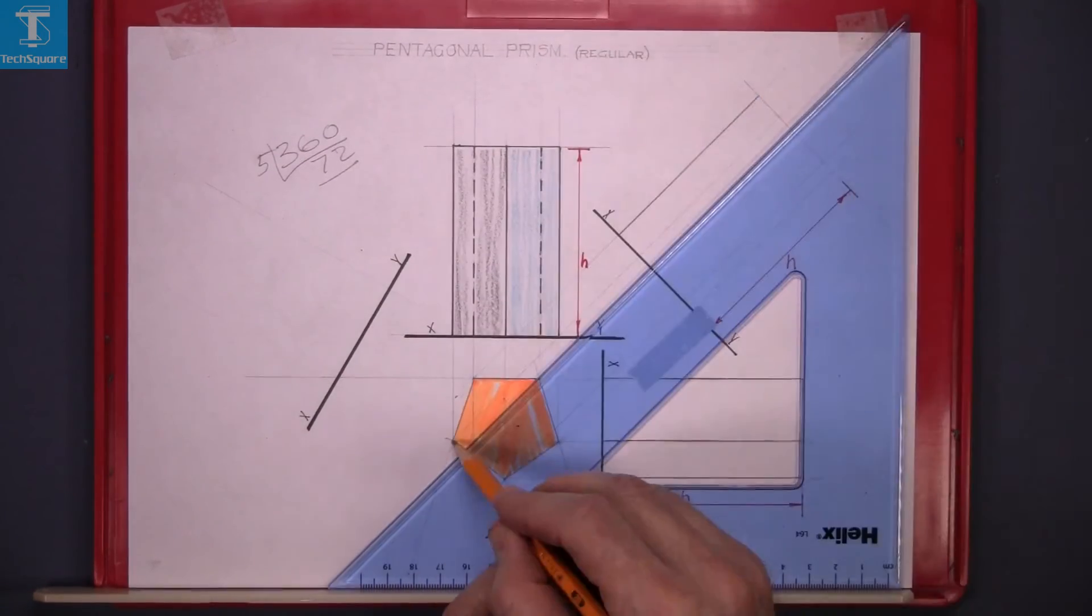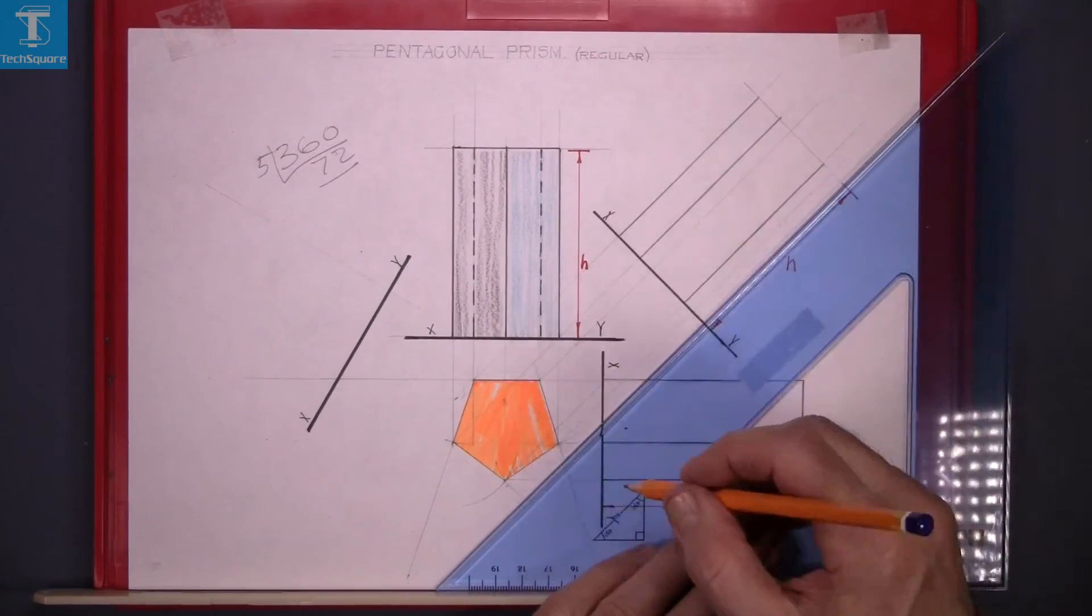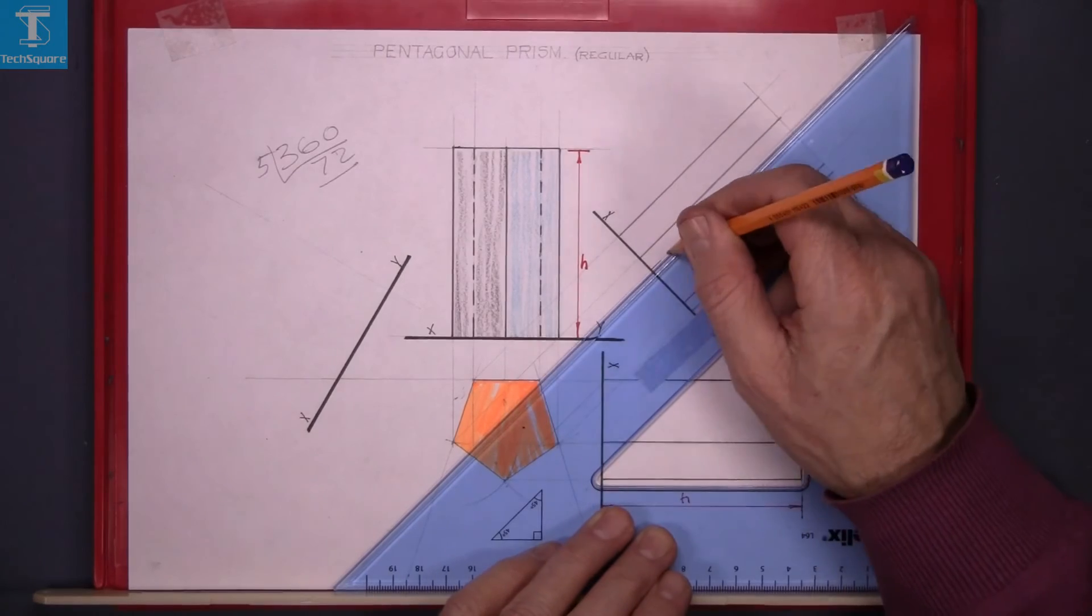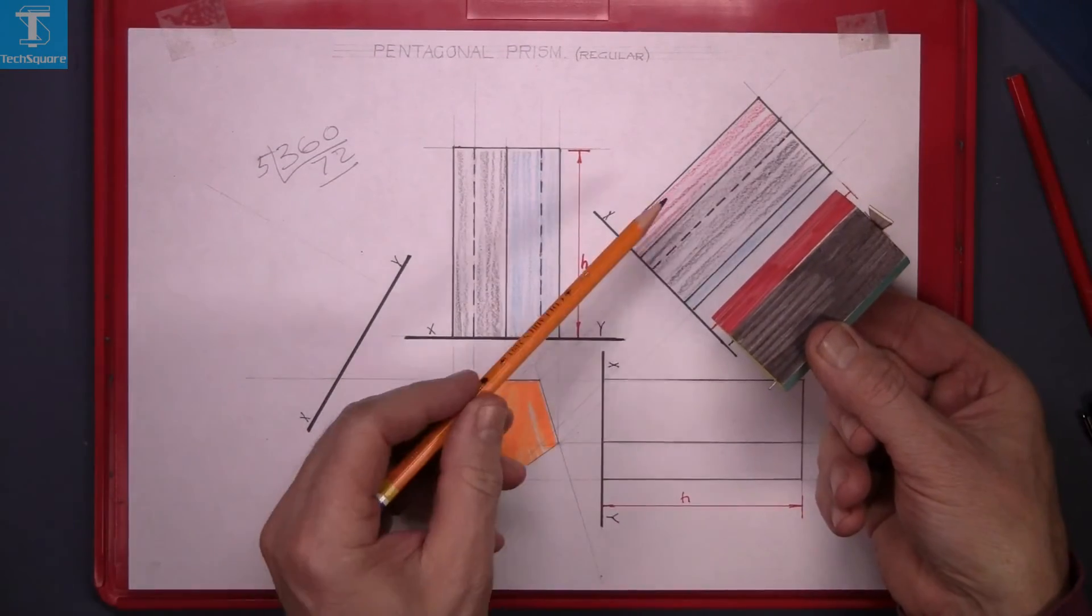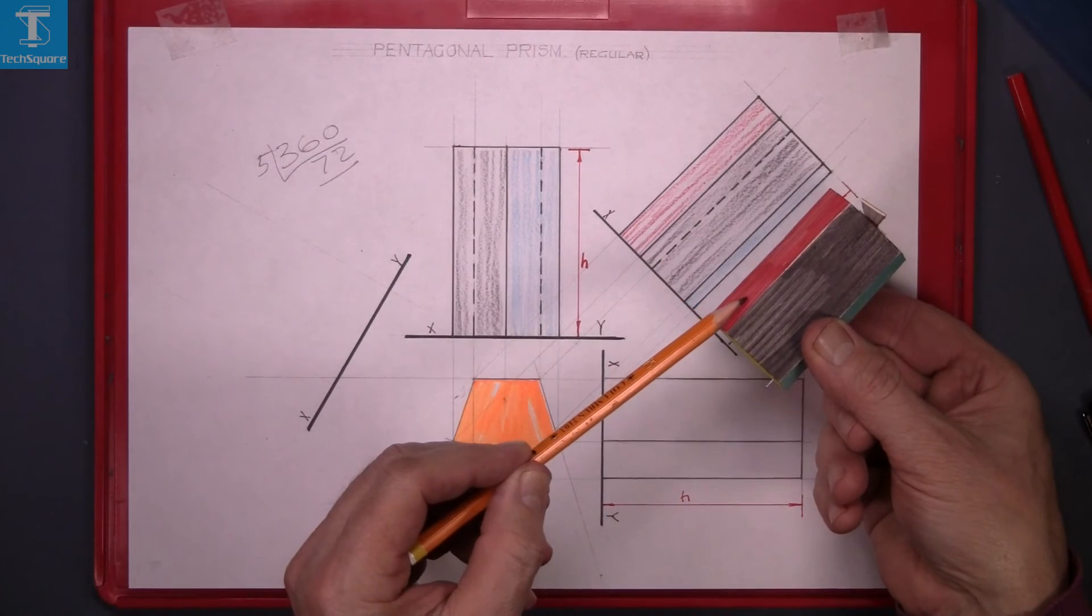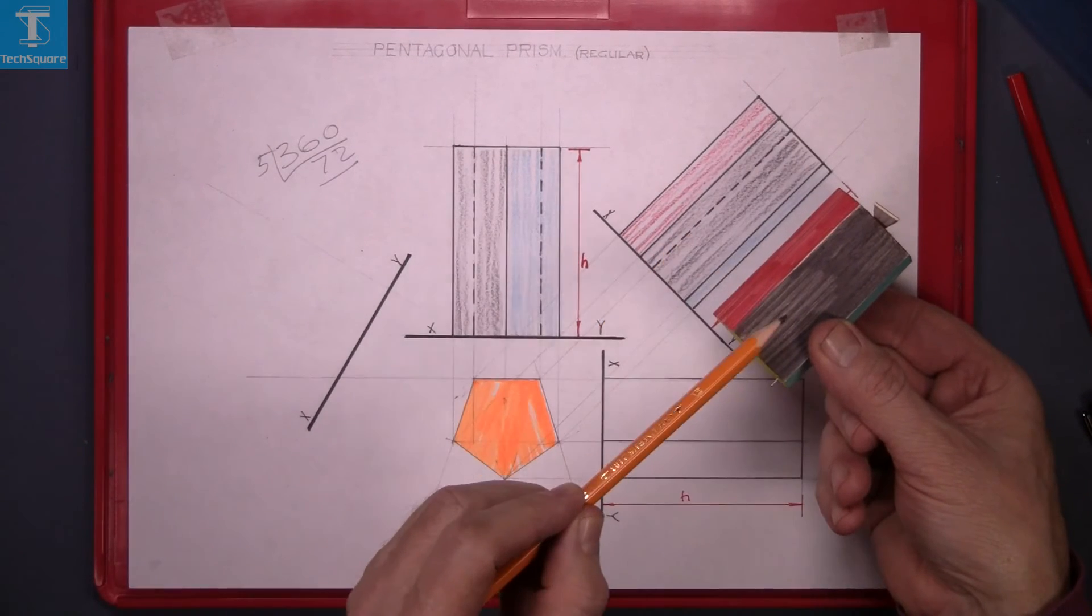So line in the lines. And then there's a dotted line there because that point is behind. And there's the red surface there, the black surface, the front here.